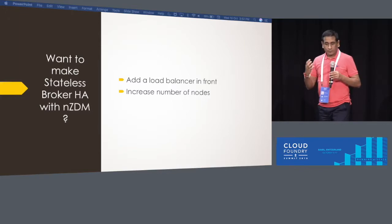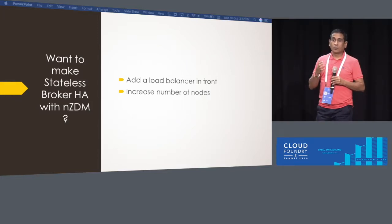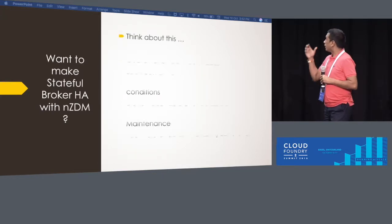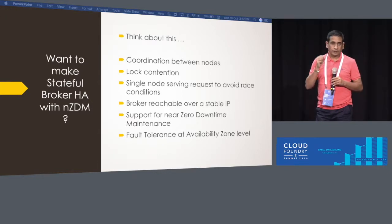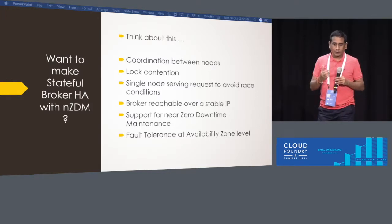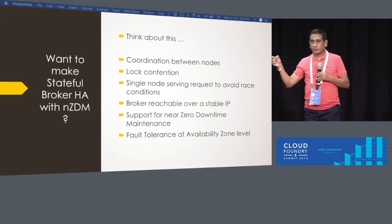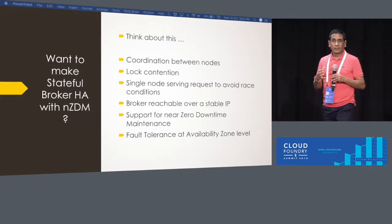If you want a stateless broker, there are well-defined principles: add a load balancer in front, scale out, increase the number of nodes, and do horizontal scaling. This is easy to do. But this is not true when state is being maintained within the broker. You have to coordinate between nodes. There are problems of lock contention — solving how locks can be attained, how they can be coordinated, and how nodes talk to each other in a seamless and scalable way.